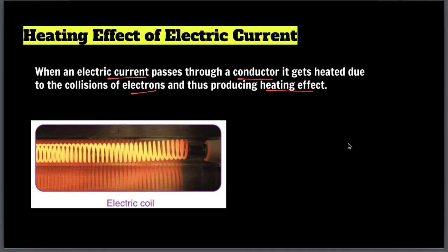Take an easy example: if you rub your palms together, what happens? Both palms get warm — heat is produced. Similarly, in a conductor, many electrons move when current passes. There are collisions, and due to a very large number of electrons colliding with each other, a large amount of heat is produced. For example, in an electric coil — the coil is conducting, and when current passes through it, it gets heated. That is the heating effect of electric current.